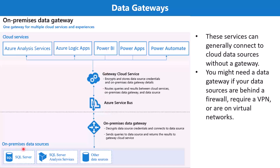An on-premises location means that the location cannot be accessed directly through the internet — it is either on a local computer or on a local network. Examples include a local SQL Server, a local SQL Server Analysis Services, and your Excel or CSV files on your laptop or machine.